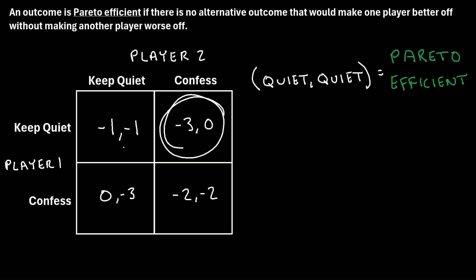Now let's consider the next outcome: player one keeps quiet and player two confesses. If we move to one alternative, player one's payoff improves from negative three to negative one — that's better for player one. But player two would be worse off, going from zero to negative one. If we move to another alternative, player one improves from negative three to zero, but player two goes from zero to negative three — also worse off.